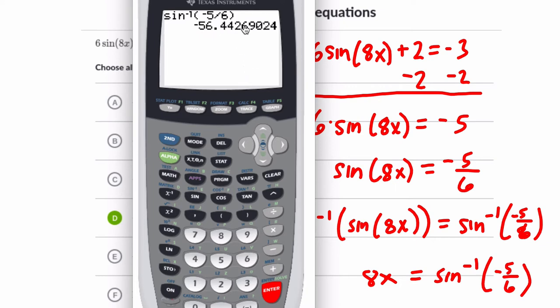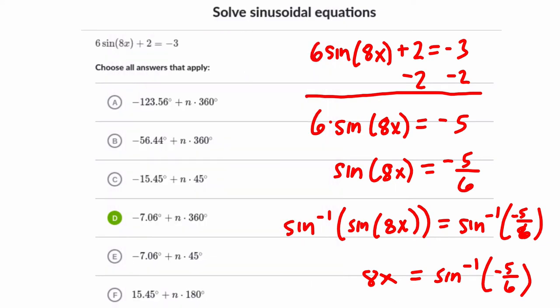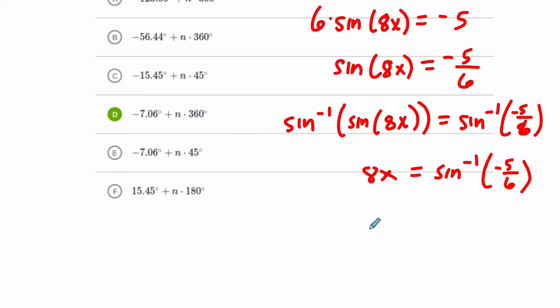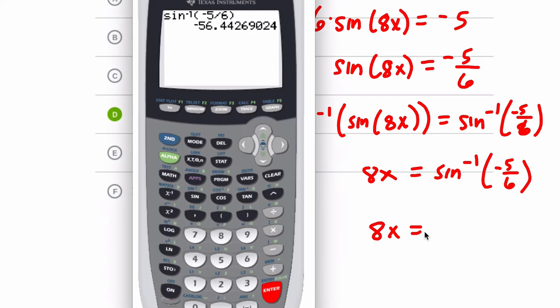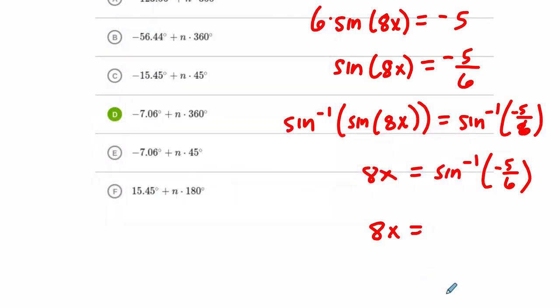So it's about negative 56.44 degrees. And I'm going to leave this value here. The idea is that 8x will then have to equal about negative 56.44. If 8x equals negative 56.44, if you take the sine of negative 56.44, you're going to get negative 5 sixths, and this whole thing works out.